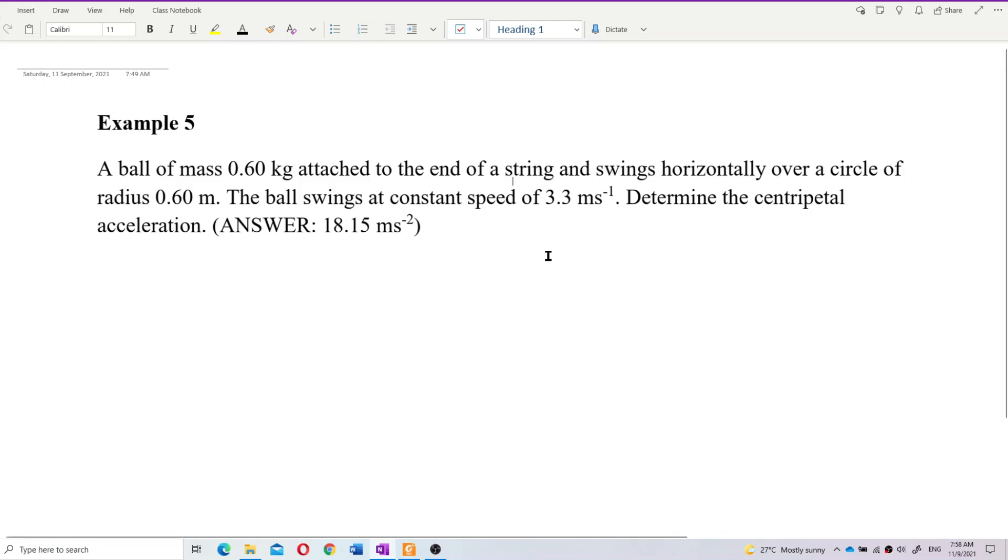All right. A ball of mass 0.60 kg attached to the end of a string swings horizontally over a circle of radius 0.60 m. The ball swings at a constant speed of 3.3 m/s. Determine the centripetal acceleration.